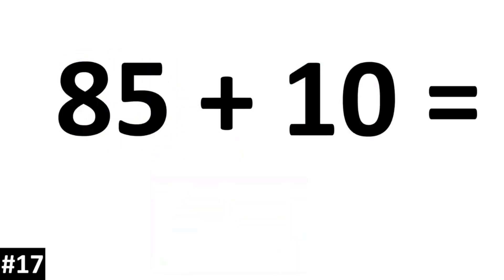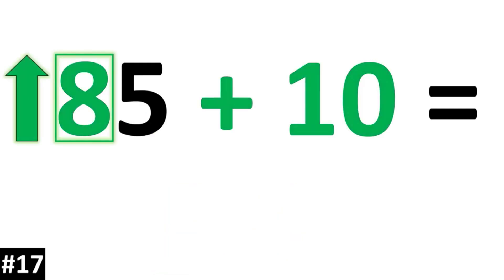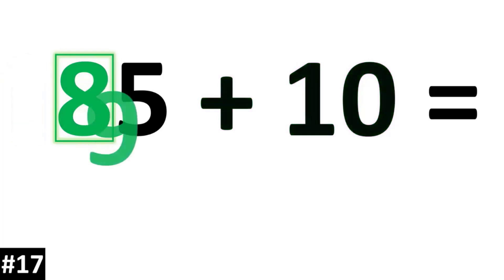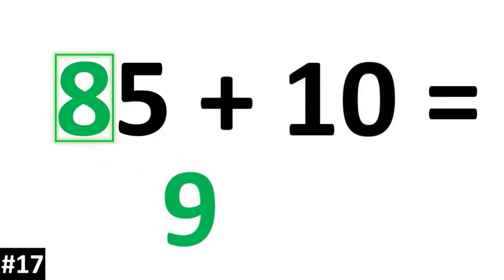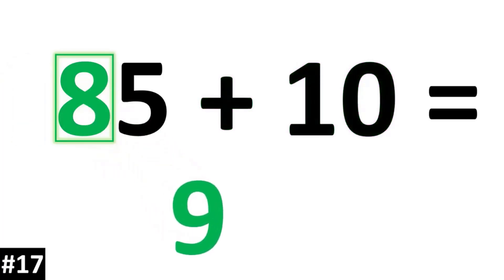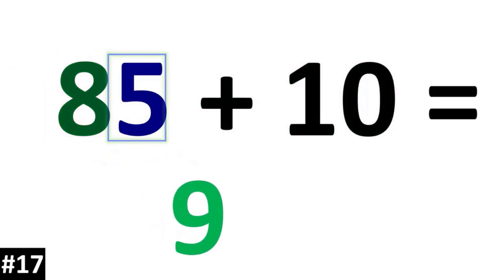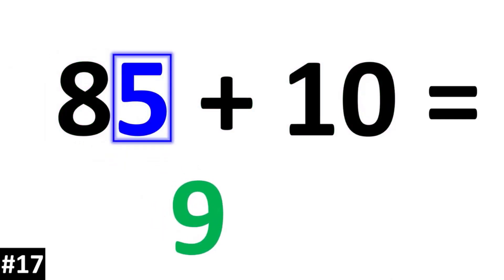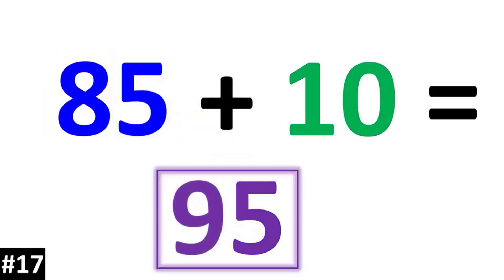85 plus 10: the tens digit is an 8. Going up by 1, the 8 becomes a 9. And the ones digit stays the same. 85 plus 10 is 95.